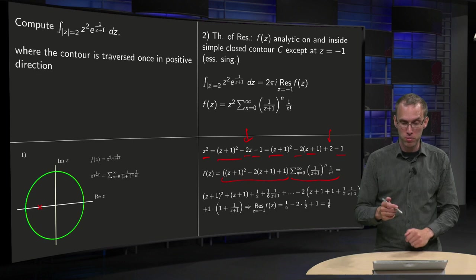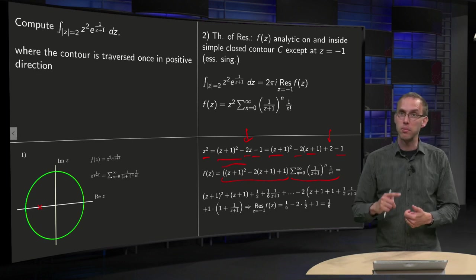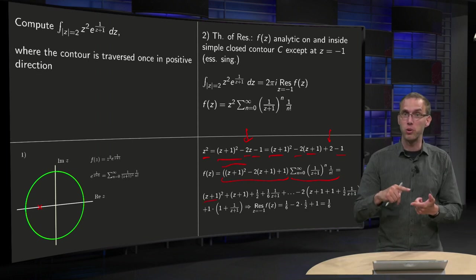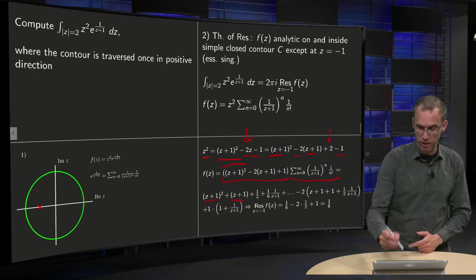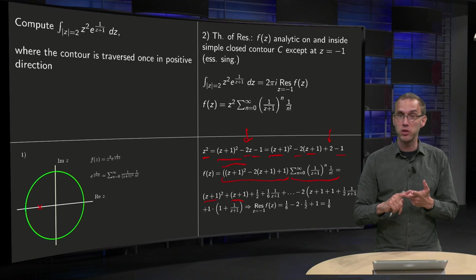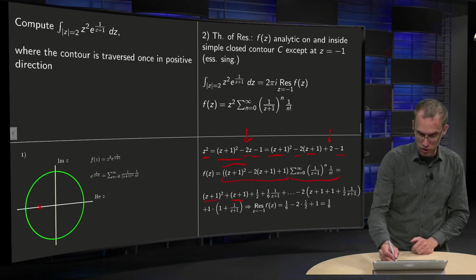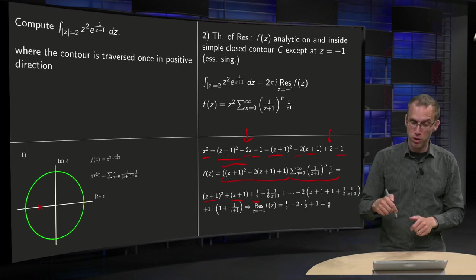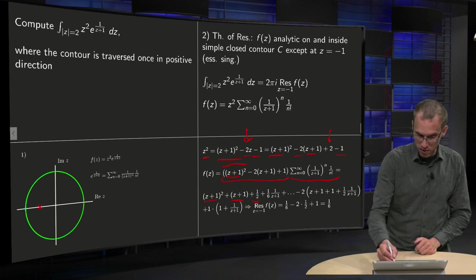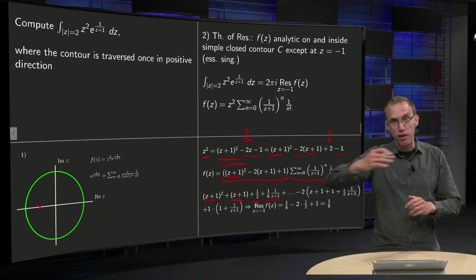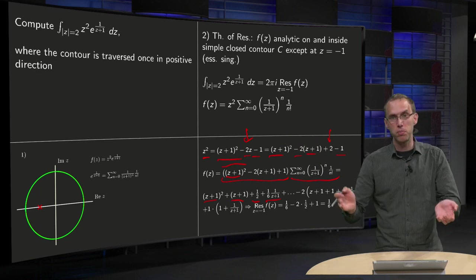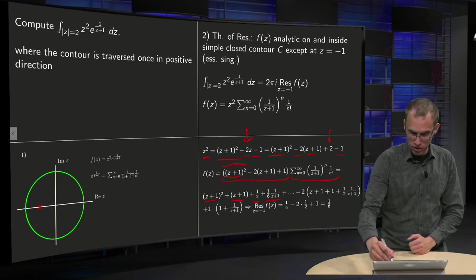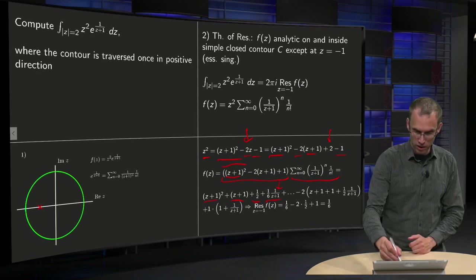You only need the 1 over z plus 1 term. So if we expand the first few terms, start with z plus 1 squared times 1 yields z plus 1 squared, plus 1 over 1 factorial and 1 over z plus 1 yields z plus 1, plus 1 over 2 factorial times 1 over z plus 1 squared yields z plus 1, plus 1 over 3 factorial times 1 over z plus 1 cubed yields together with z plus 1 squared, 1 over 6 times 1 over z plus 1. And we have more terms, 1 over z plus 1 squared, 1 over z plus 1 cubed, but all those don't matter at all because you only need the 1 over z plus 1 term and we have it over here. Then we are done with this part.